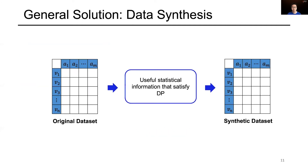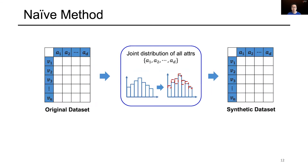To address this problem, a promising solution is to generate a synthetic dataset in a differentially private manner. With the synthetic dataset, we can conduct any downstream data analysis tasks without consuming extra privacy budget and without modifying the existing algorithms. The general idea of this paradigm is to first extract some useful statistical information from the original dataset that satisfies DP and use this statistical information to generate the synthetic dataset.